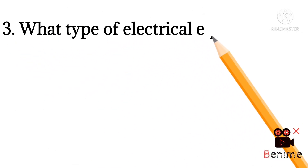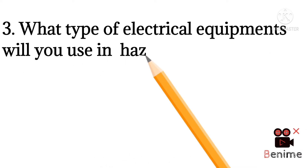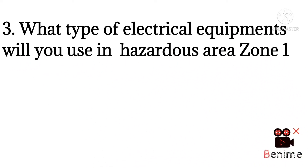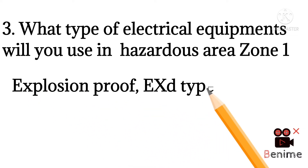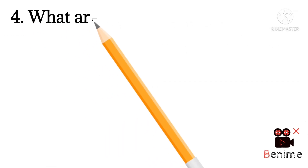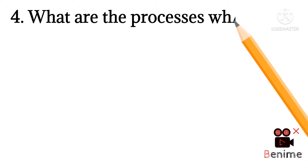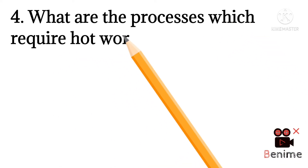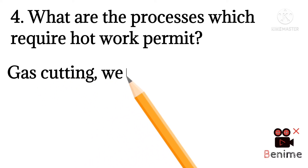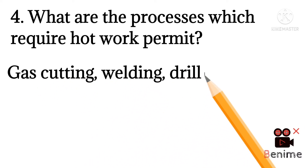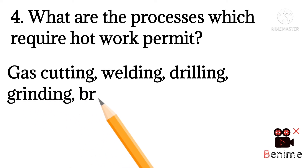Question number three: what type of electrical equipment will you use in hazardous area zone one? We use explosion-proof ExD type equipment for zone one. Question number four: what are the processes which require a hot work permit? Gas cutting, welding, drilling, grinding, and brazing — these activities require a hot work permit.